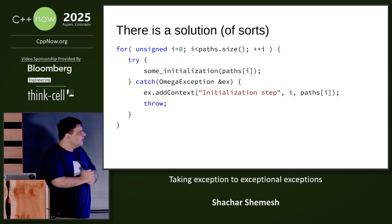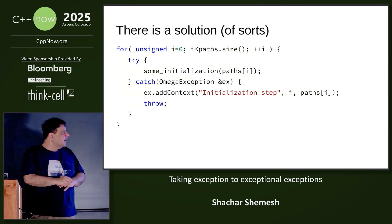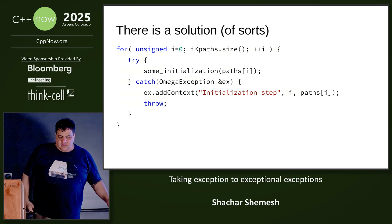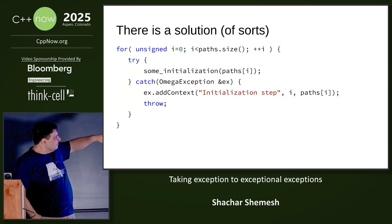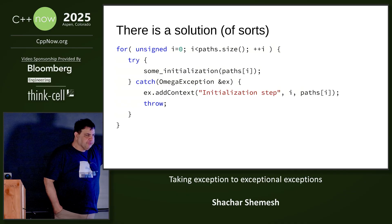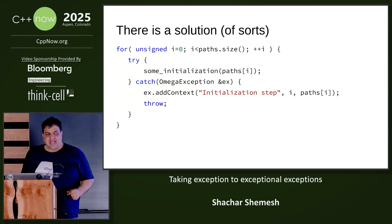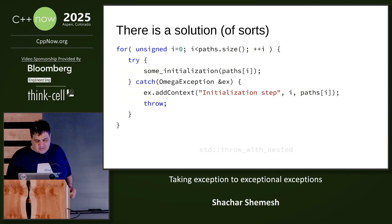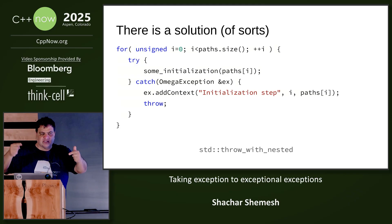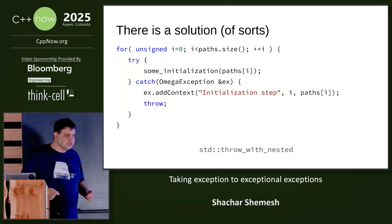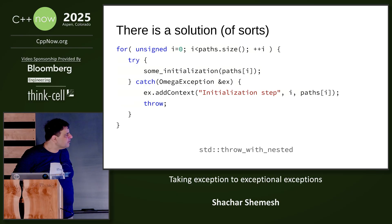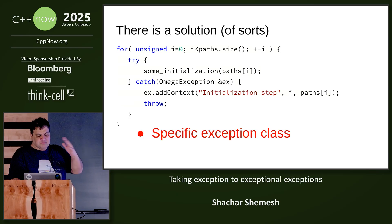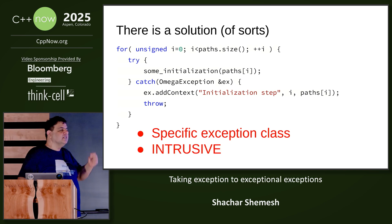There's a solution, of sorts. I call it 'catch and release.' We define our own exception object, catch it, add context, and re-throw. Anyone here likes this? No. You don't have to use a special exception object — you can use throw_with_nested to augment several exception types together. It doesn't matter because a specific exception class is not necessarily required, but it is intrusive.